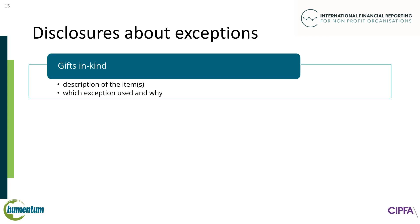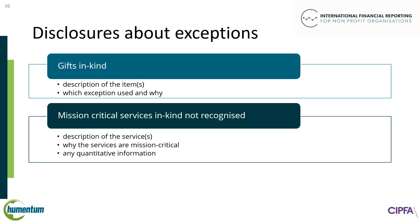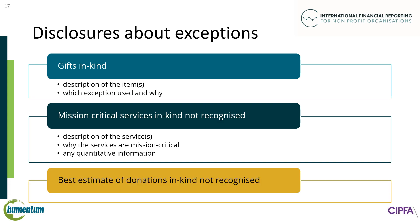Whenever one of the permitted exceptions is used, INPAG requires additional disclosures. For gifts in kind, NPOs should disclose a description of the items, the exception that has been used, and why. Where mission critical services in kind are not recognized, NPOs must make disclosures. They must describe the services and why they are mission critical, as well as any other quantitative information that would be useful for transparency, such as the number of days or number of volunteers. To further support transparency, NPOs are also encouraged to disclose a best estimate of the value of any donations in kind received but not recognized as revenue.